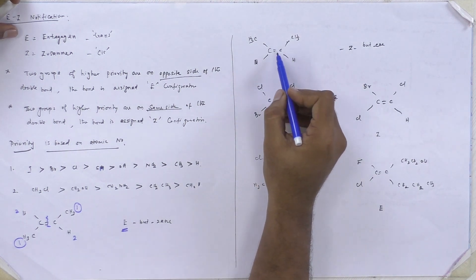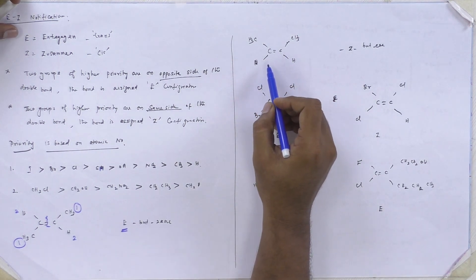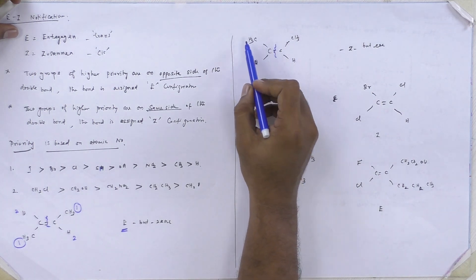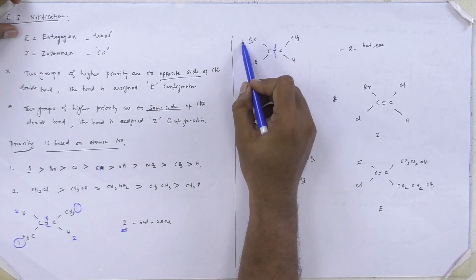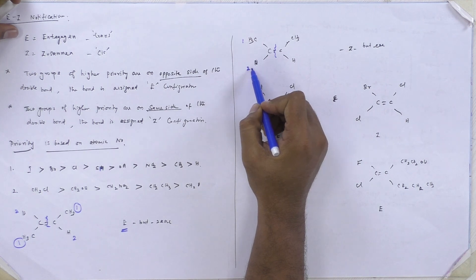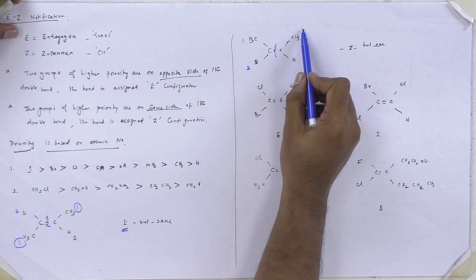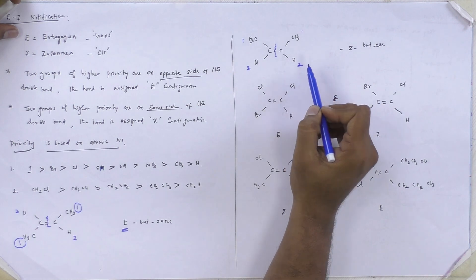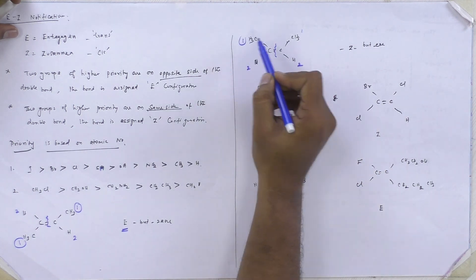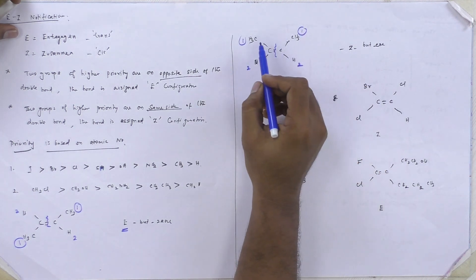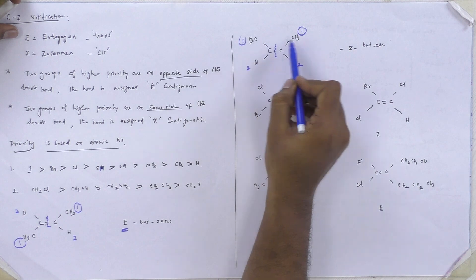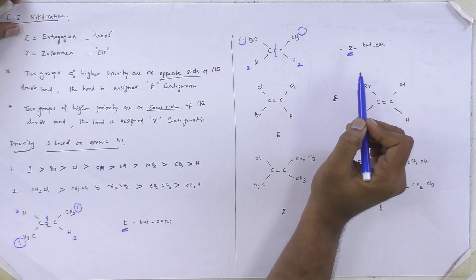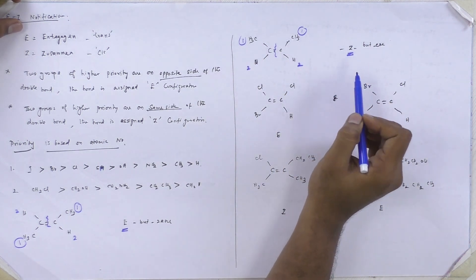So the next example. We split into two parts. Methyl is highest priority and hydrogen is least. Here methyl is higher and hydrogen is lower. So the highest priorities are on the same side, so it is Z configuration.